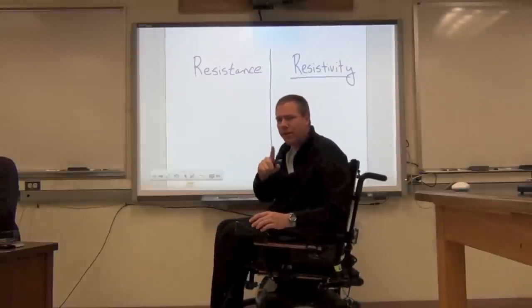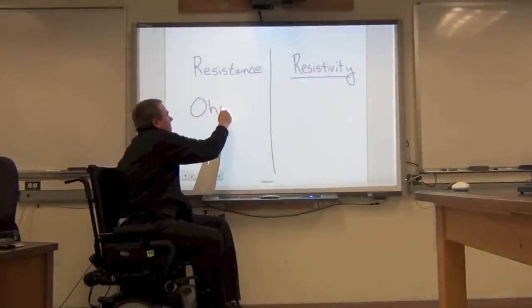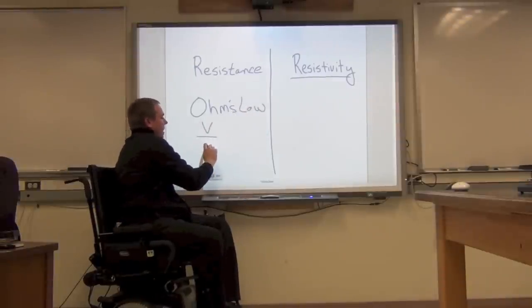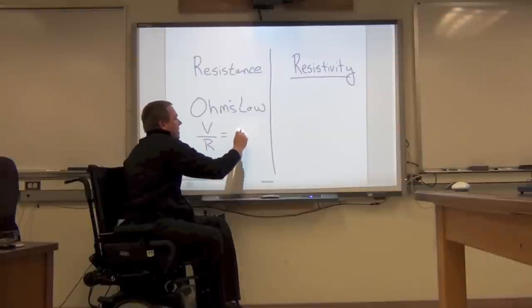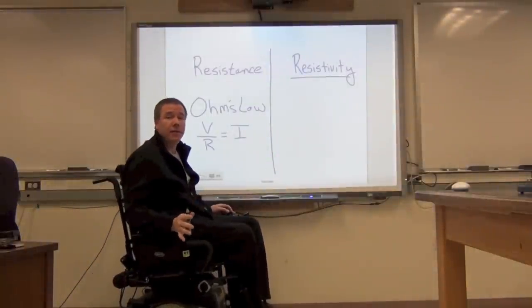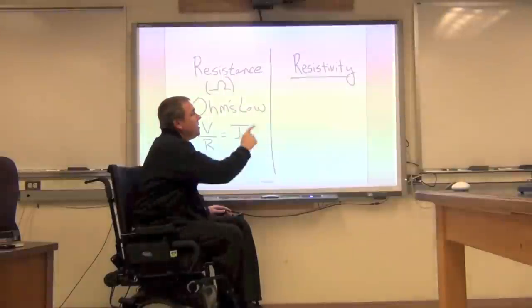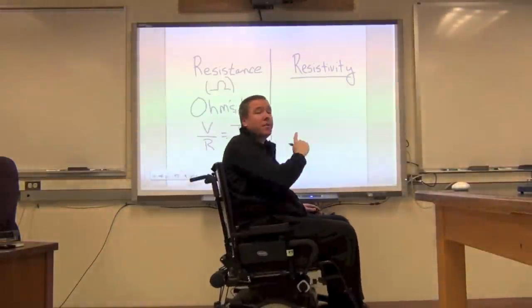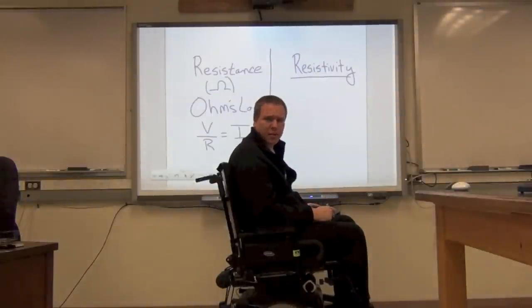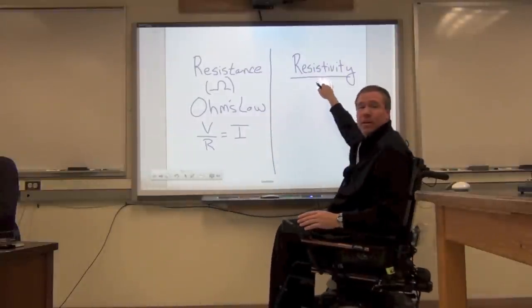Now just very quickly, I don't want to confuse you, so just pay attention for only a moment about Ohm's Law. Ohm's Law says that if we have a voltage potential difference and we divide by the resistance, that will tell us how much current there is. We'll be looking at Ohm's Law in a different experiment. Resistance is measured in Ohms. Resistivity is not measured in Ohms.